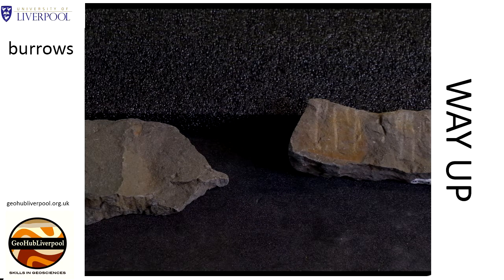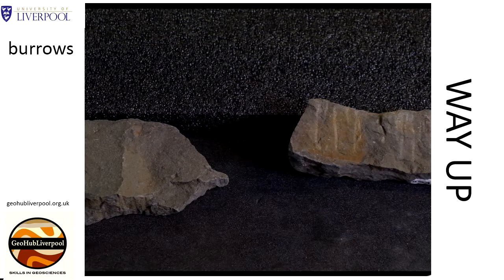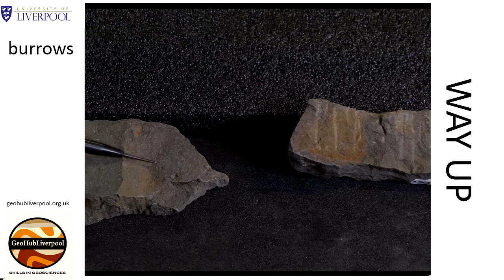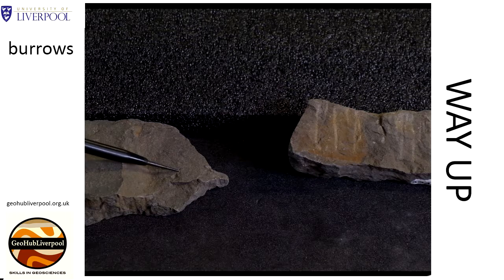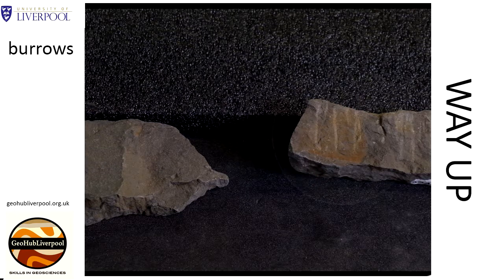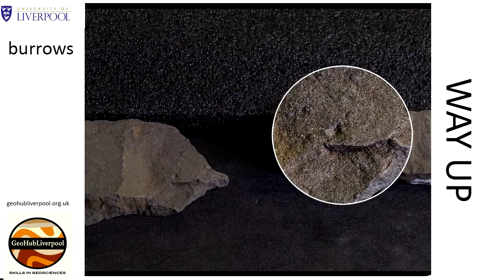Geologists use a variety of primary sedimentary structures to work out the younging direction, or the way up direction, in rocks. These rock specimens show trace fossils formed when burrowing organisms like worms burrowed into soft sediment. On this bedding plane you can see raised rims of the circular vertical burrows that were made by organisms.